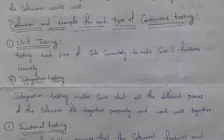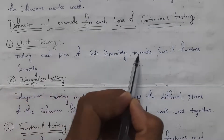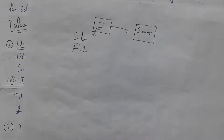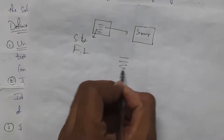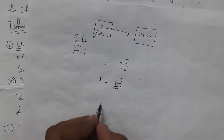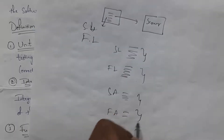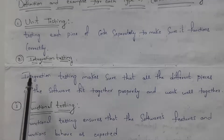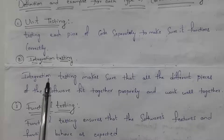There are various kinds of testings in continuous testing. The first is unit testing — testing each piece of code separately to make sure it functions correctly. For example, in a college website, code for the student login form, faculty login form, student attendance form, and faculty attendance form are each tested separately. Testing each piece of code separately is known as unit testing.